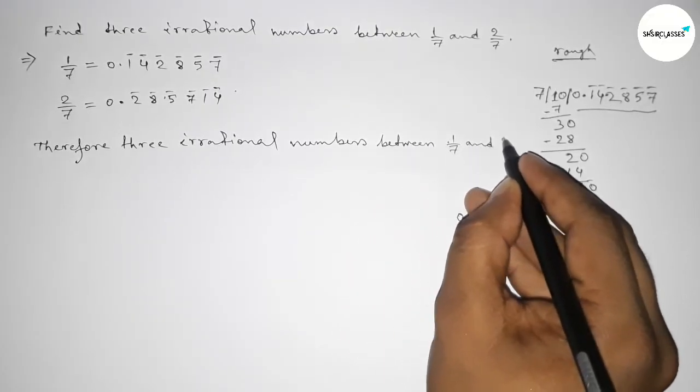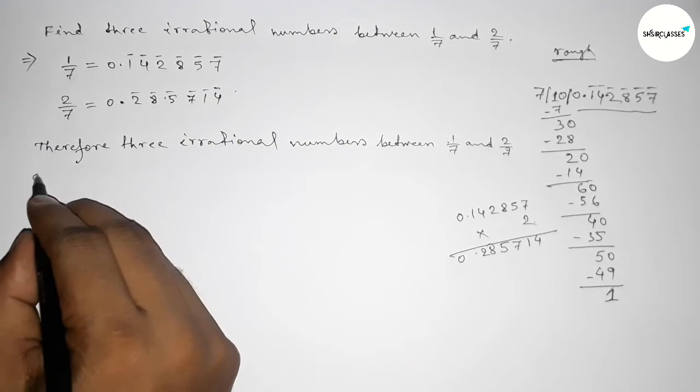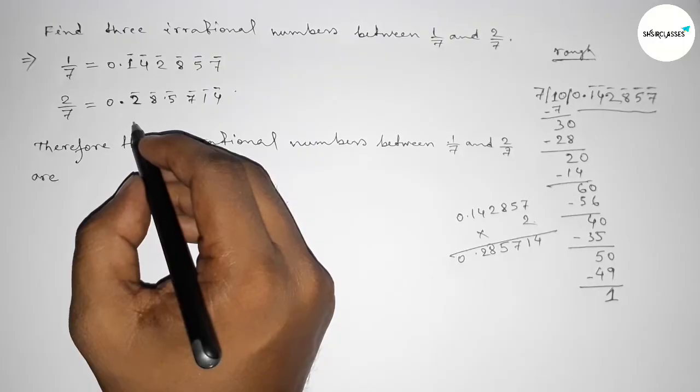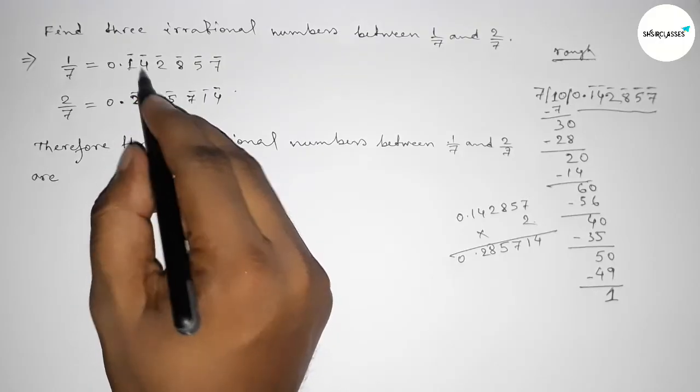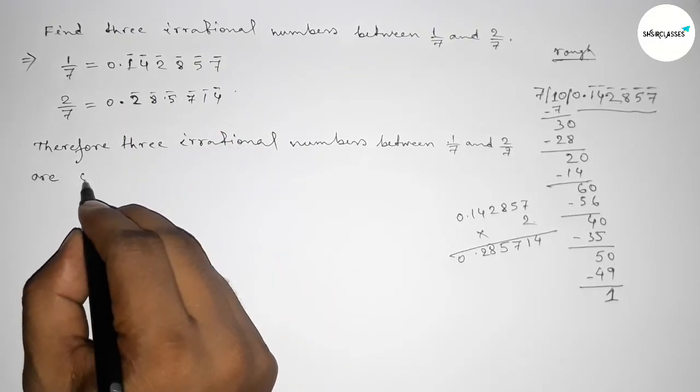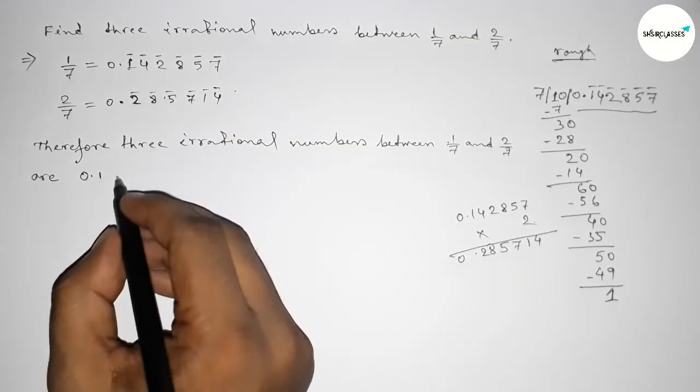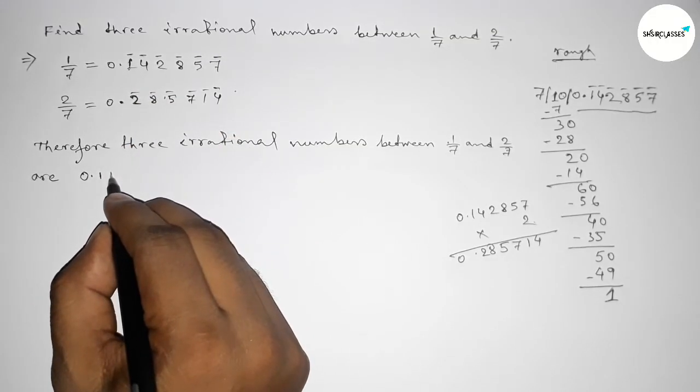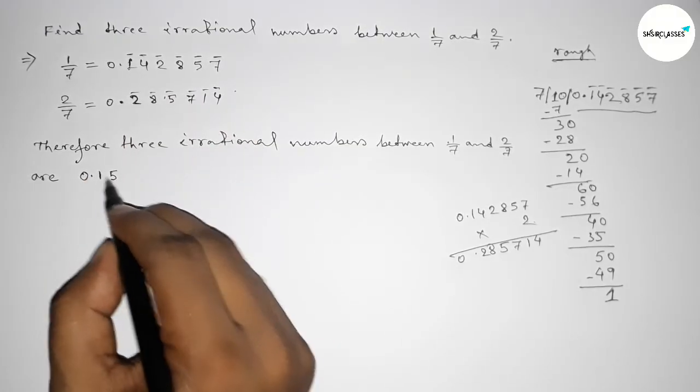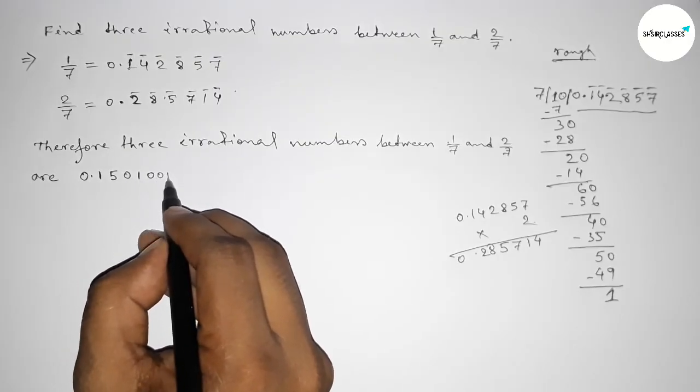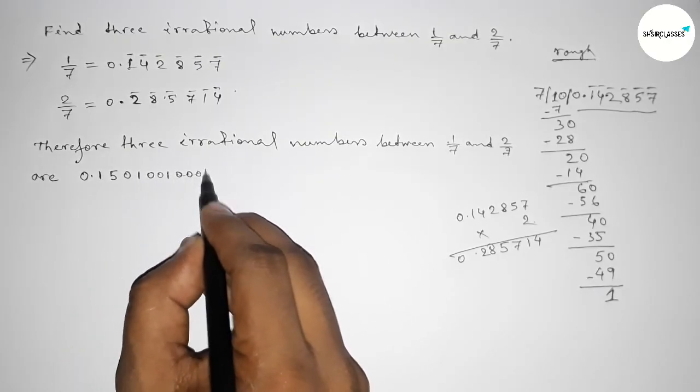So now first I'll find one irrational number between these two numbers. First taking 0.1 and taking greater than this, we can take 5. This is greater than 4, so 0.15. Now taking 0, 1, then 2 zeros, 1, then triple 0, 1, and so on continuously.